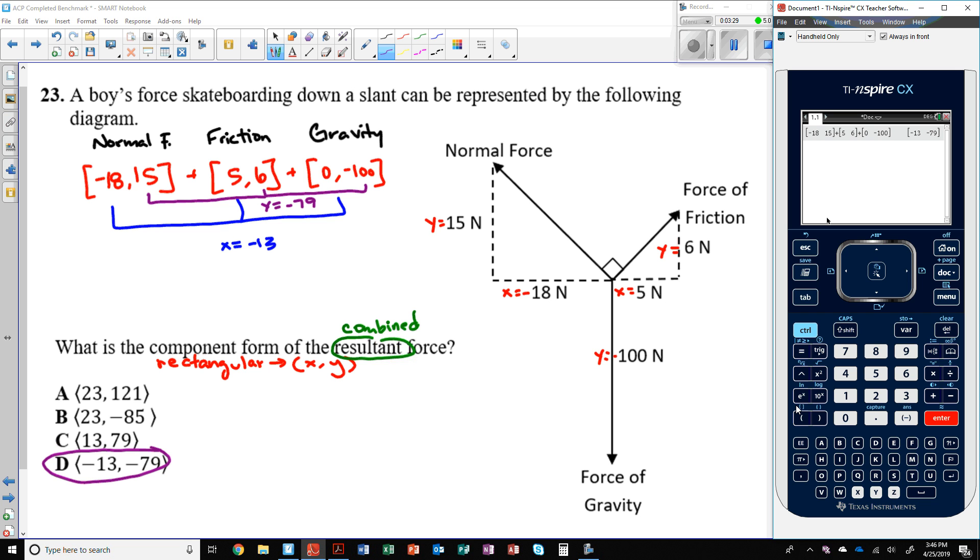negative 79 would be the answer. If you happen to need to know the magnitude or direction, what you would then do is convert it to polar. If I go menu 7 for matrix and vectors, C down here, all the way at the bottom for vector, and then choose 4, convert to polar,